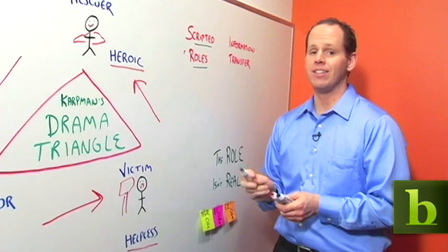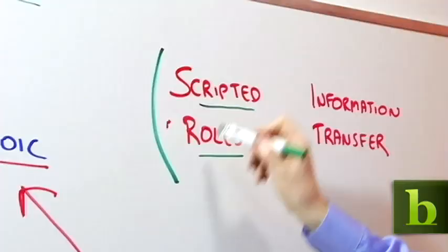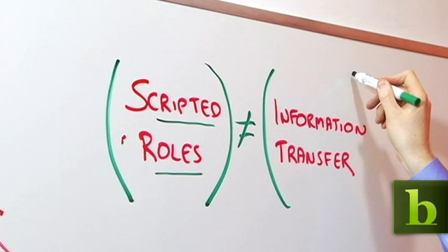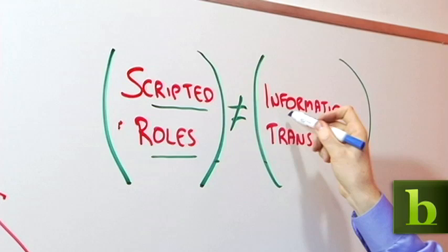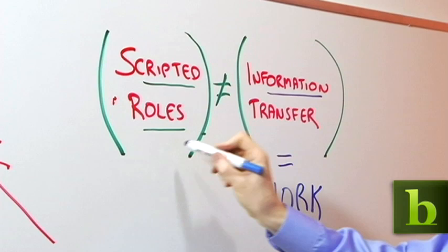That's the problem with scripted roles in the workplace. Scripted roles are not equal to information transfer. In fact, scripted roles are the opposite of information transfer. We work in the information age. Information transfer is equal to work. In other words, when we're having drama with scripted roles, we're not doing the work.